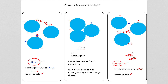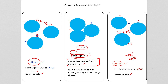But when the pH is close to the PI, the net charge is close to zero — the number of positive and negative charges in the protein is equal. In this case, protein solubility in water or in aqueous solutions like blood or cell cytoplasm will tend to go down dramatically. So proteins are least soluble at their isoelectric point, or PI.